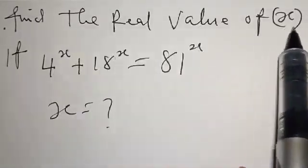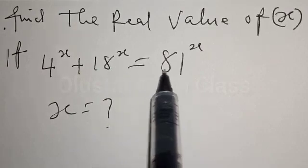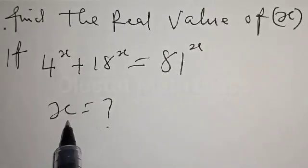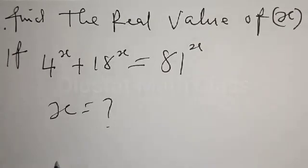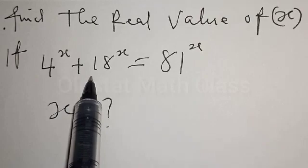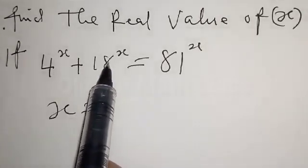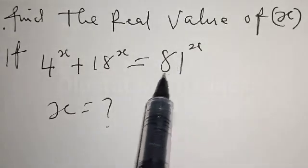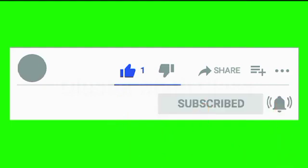Find the real value of x if 4 raised to power x plus 18 raised to power x is equal to 81 raised to power x. What is the value of x? Hi everyone, welcome to my class. In today's class we want to look at how we can find the value of x from this given exponential equation: 4 raised to power x plus 18 raised to power x is equal to 81 raised to power x. Please don't forget to like, share, comment and subscribe to the channel for more new videos.